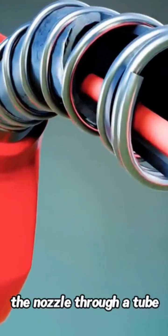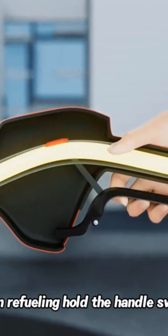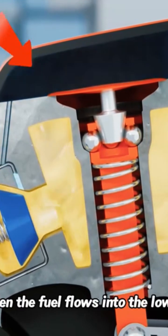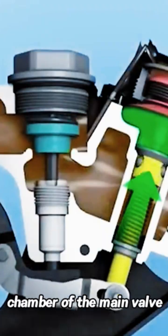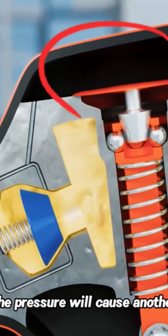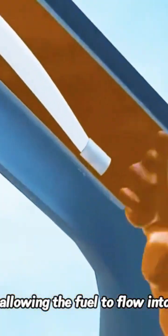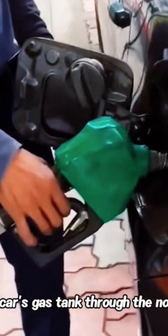It extends to the end of the nozzle through a tube. When we're fueling, hold the handle switch and the pushrod will open the main valve switch. When the fuel flows into the chamber of the main valve, the pressure will cause another valve to open simultaneously, allowing the fuel to flow into the car's gas tank through the nozzle.